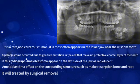Amyloplastoma affects the surrounding structures, causing disruption of the bone and roots. It is treated by surgical removal.